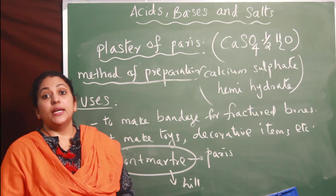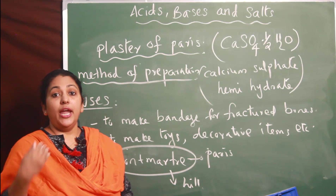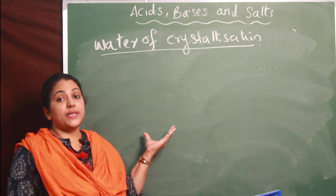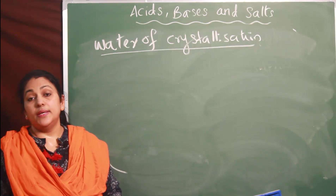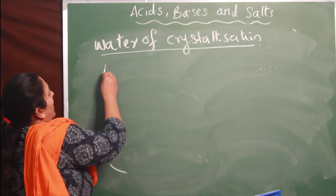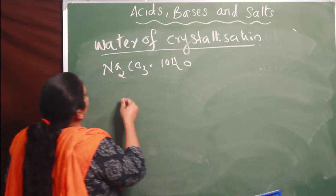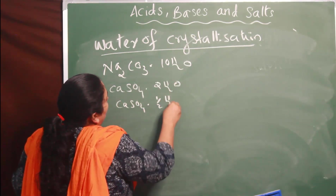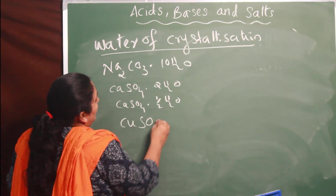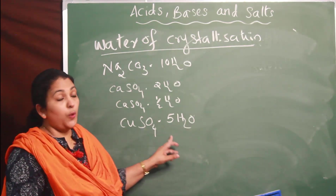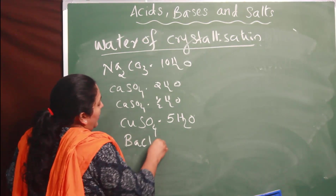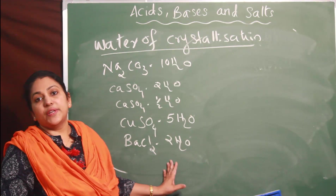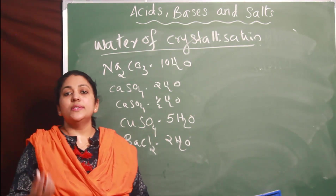Now let us discuss water of crystallization. You have learned some examples: washing soda Na2CO3·10H2O, gypsum CaSO4·2H2O, plaster of Paris CaSO4·½H2O, copper sulfate CuSO4·5H2O, and barium chloride BaCl2·2H2O. These are salts with water of crystallization. Don't think these salts are wet in nature - they are actually dry salts.